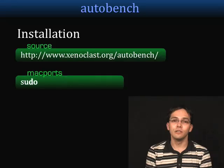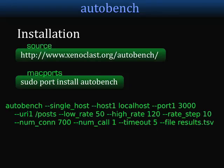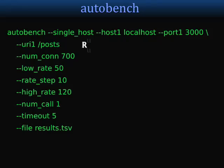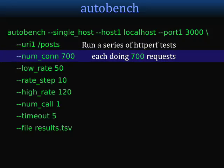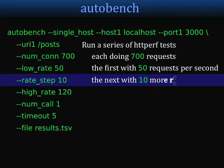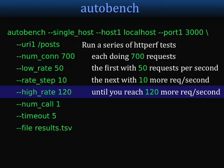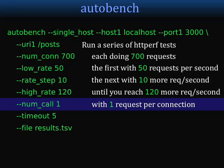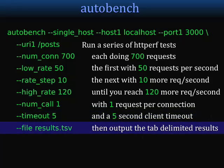You can download the source for AutoBench at the URL shown here, or install it using Mac ports. In order to run it, you might have a command that looks something like this. What this AutoBench command is saying is: run a series of HTTPerf tests, each doing its own set of 700 requests to the server. The first test will have 50 requests per second — that's the low rate. Each additional test adds 10 more requests per second until we reach the high rate of 120 requests per second. Each request has only one request per connection, the timeout is five, and the output goes to results.tsv — basically tab delimited.